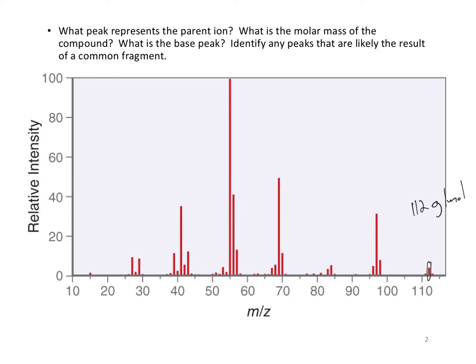And then the next thing they ask is to identify any peaks that are likely the result of a loss of a common fragment. And so what we need to do there is find the difference between the m to z ratio for these major peaks and the parent ion peak.